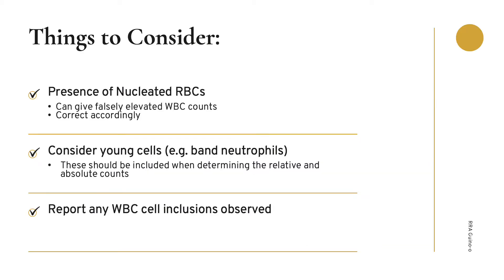Some things to consider when evaluating WBC parameters: the presence of nucleated RBCs can give falsely elevated WBC counts. When doing your peripheral blood smear evaluation and you notice nucleated RBCs, you have to correct your WBC count accordingly. In addition, consider the presence of young cells — for example, band neutrophils being the most common one. These should be included when determining the relative and absolute counts. For example, if you have a neutrophil relative count of 50% and a band neutrophil count of 10%, you add both, giving a neutrophil relative count of 60%.